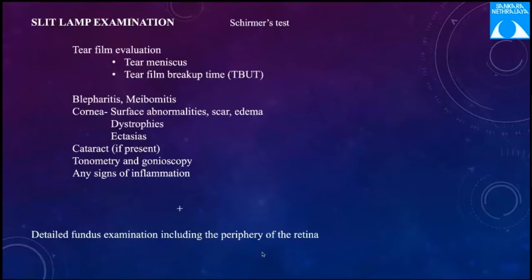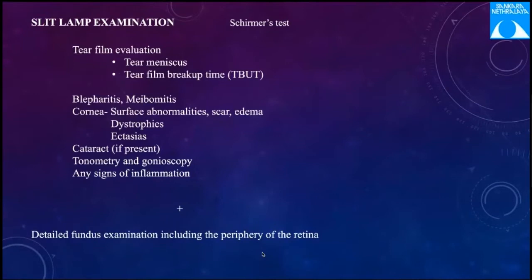Before slit lamp examination, Schirmer's test should be done. On the slit lamp, additional tear film evaluation — tear meniscus height and tear film breakup time — can be performed. Lid abnormalities such as trichiasis, entropion, and ectropion should be noted. Any source of infection or interface debris such as blepharitis, hordeolum, and meibomitis should be ruled out, as should lacrimal punctal abnormalities.